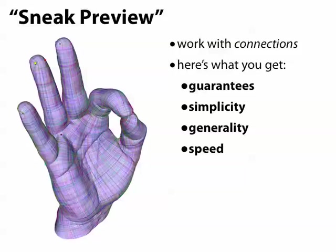It's very simple, so the hardest thing you have to do is compute a spanning tree of the edges of your mesh. It's general in the sense that we can deal not only with vector fields but also things like the cross field you see on the left. And it's very fast. At the end of the day, we just have to solve a single linear system.